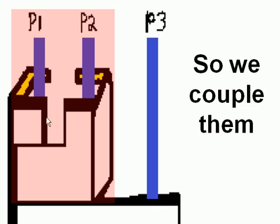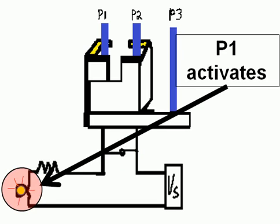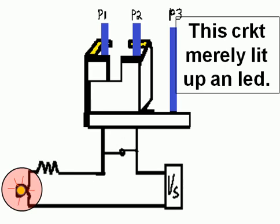So we couple them, and the switch closes. P1 activates, and this circuit merely lit up an LED. That's our simple example.